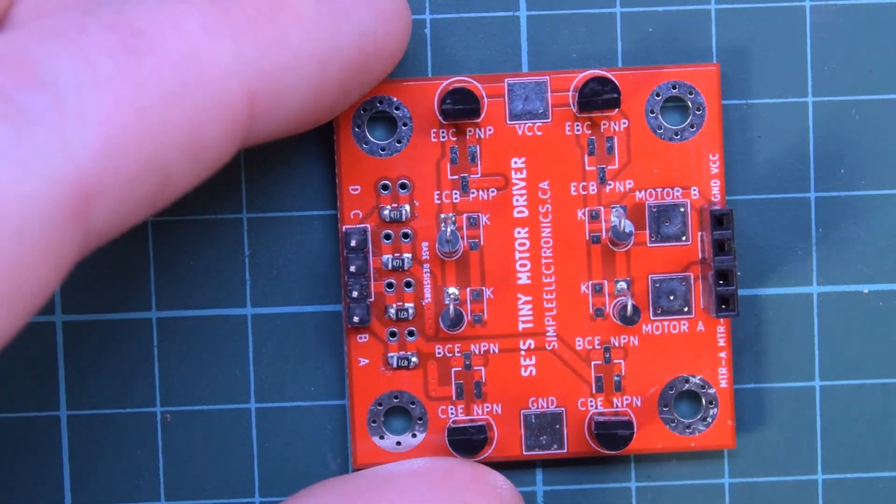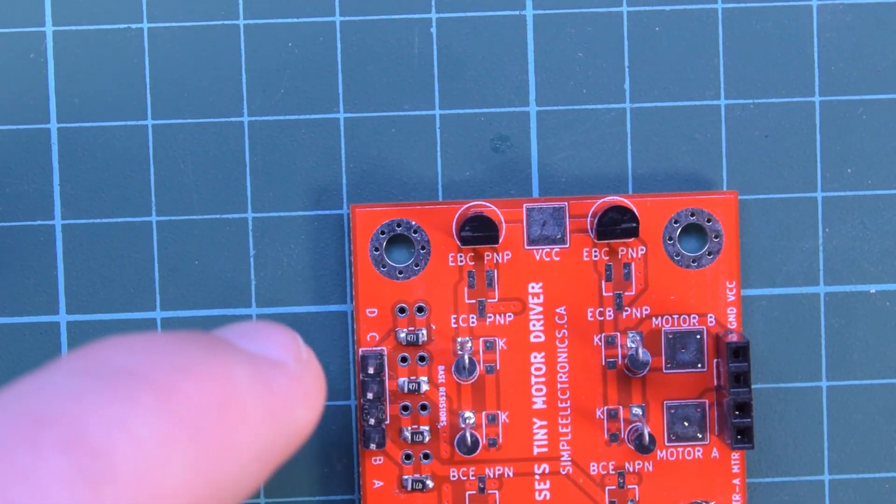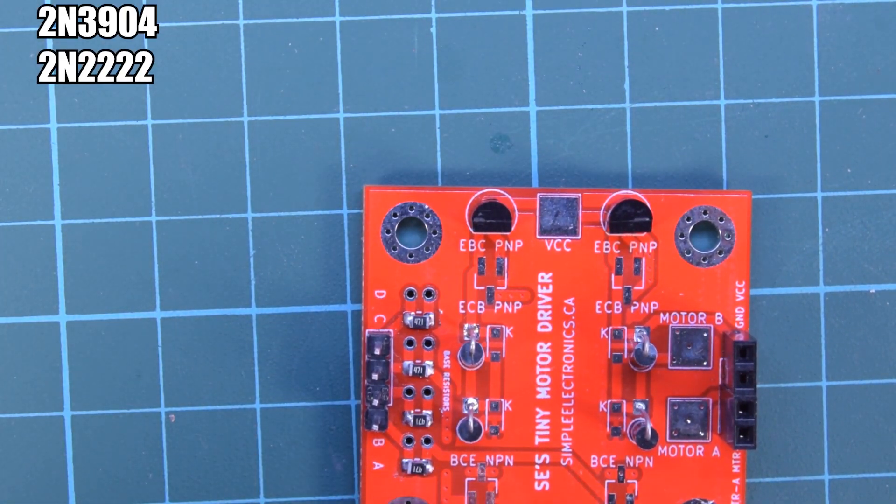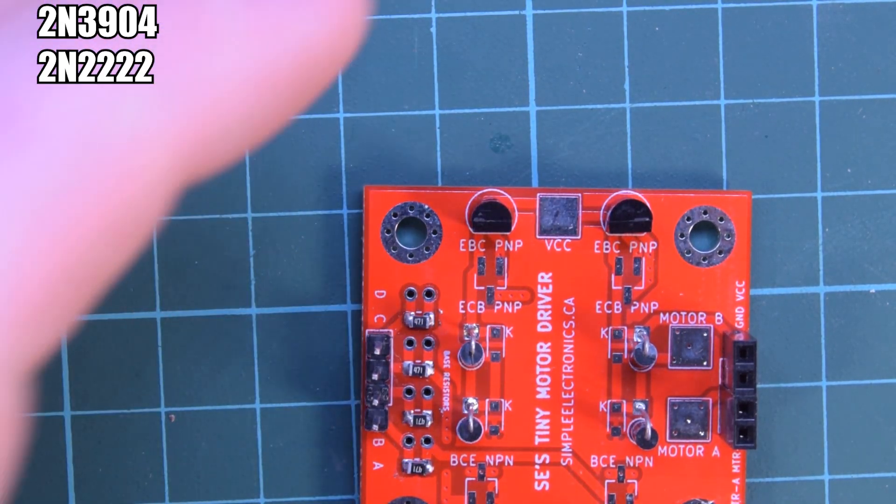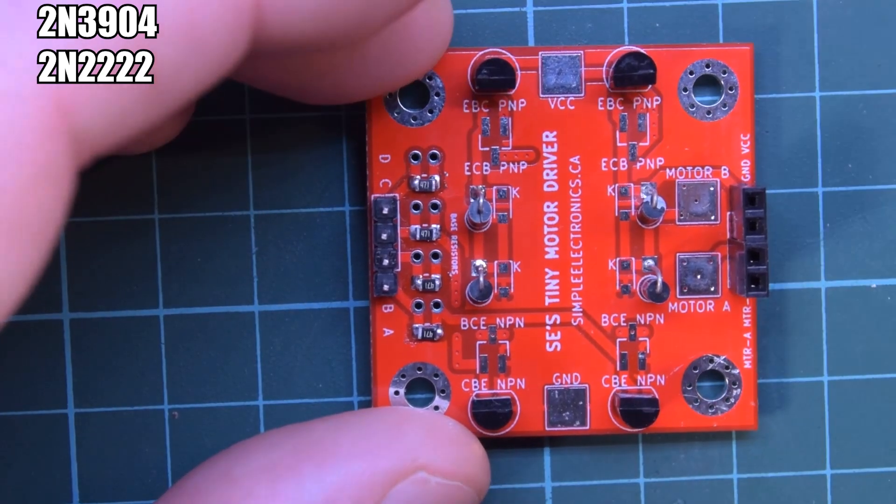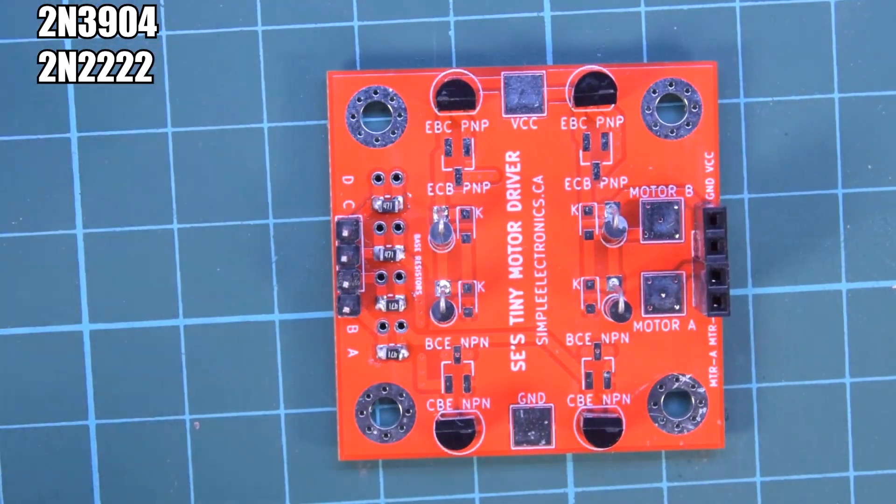But yeah, you can use basically any transistor—NPN, PNP. For the NPN, I have 2N3904s in here, but you can use the 2N2222, which is the exact same footprint. Or just adjust whatever you have to the legs that are there. So yeah, let's give this a shot.